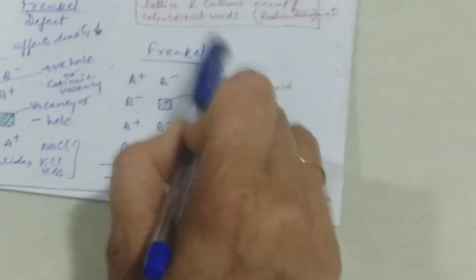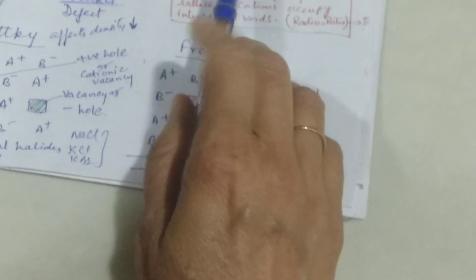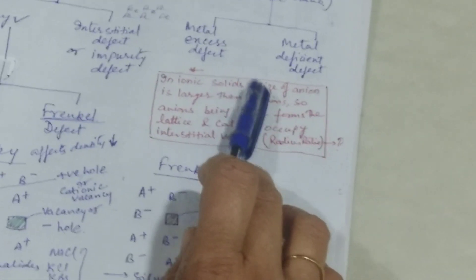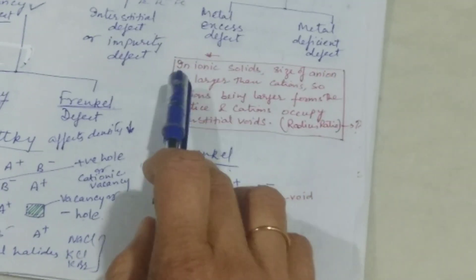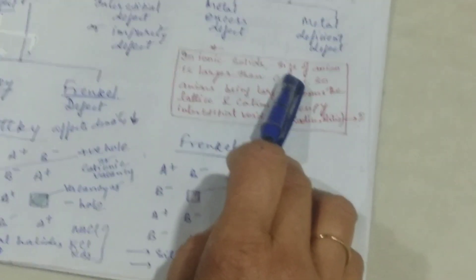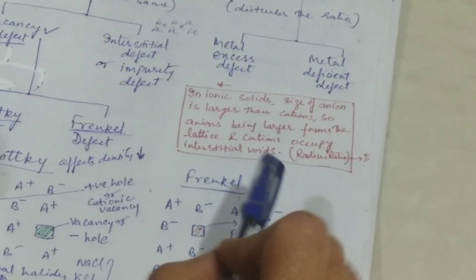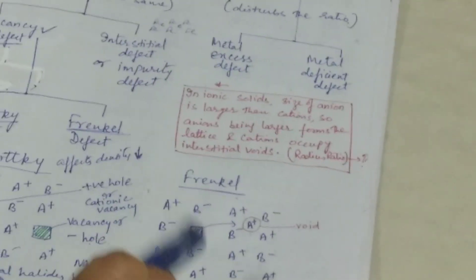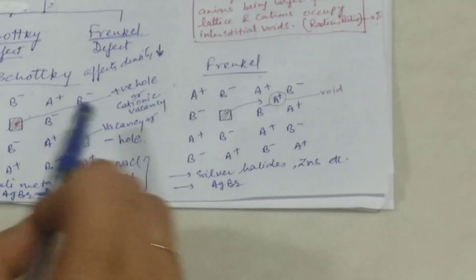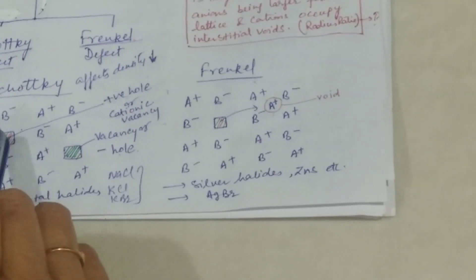Before discussing the Frenkel defect, note that in ionic solids the size of the anion is always larger than that of the cation. Since anions are bigger, they always form the lattice and cations occupy the voids — specifically the interstitial voids, which may be tetrahedral voids.